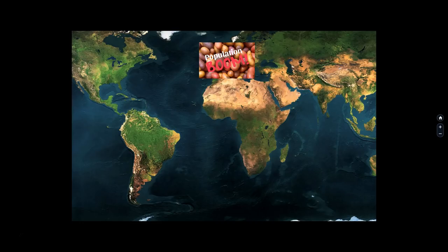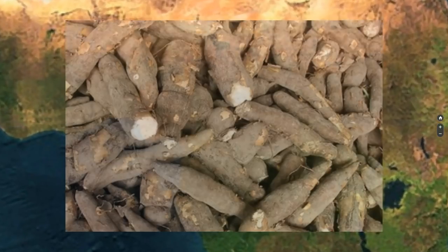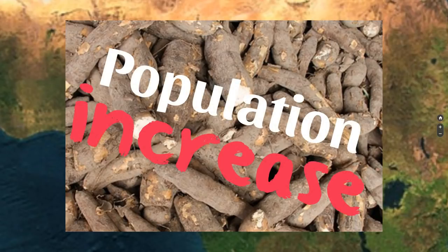A tropical plant called cassava could not be cultivated in Europe, but it thrived in Africa, where it was introduced by Portuguese traders along with maize during the 16th century. This helped facilitate a population increase in Africa as well. That population increase, happening at the dawn of European imperialism, then fed into the transatlantic slave trade, started by the Portuguese, then the Spanish, and then the rest of Europeans.